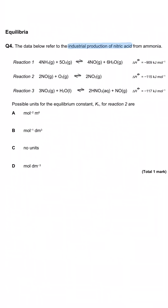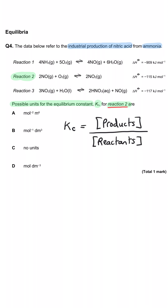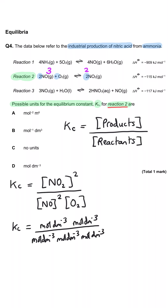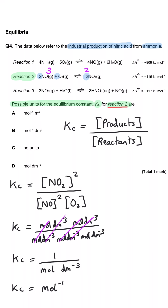The data below refers to the industrial production of nitric acid from ammonia. Possible units for the equilibrium constant Kc for reaction two are? Reaction two has three molecules on the left and two on the right, so the Kc expression has two concentration terms on top and three on the bottom. Since concentration is mol dm⁻³, on top we have mol dm⁻³ squared and on the bottom three concentration terms. Cancelling terms, we're left with one over mol dm⁻³, which rearranges to mol⁻¹ dm³. So B is correct: mol⁻¹ dm³.